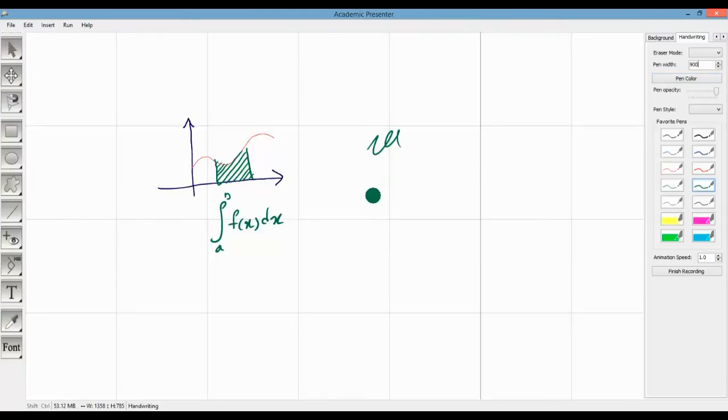Finally, if you make a mistake, you can easily invert your pen and erase the mistake. Academic presenter offers two types of erasers: point and stroke. The point eraser clears just the pixel under the eraser, unlike a stroke eraser which clears the whole stroke.